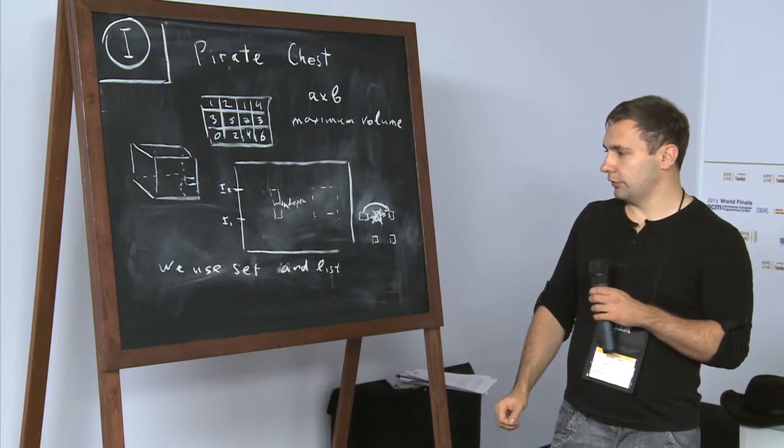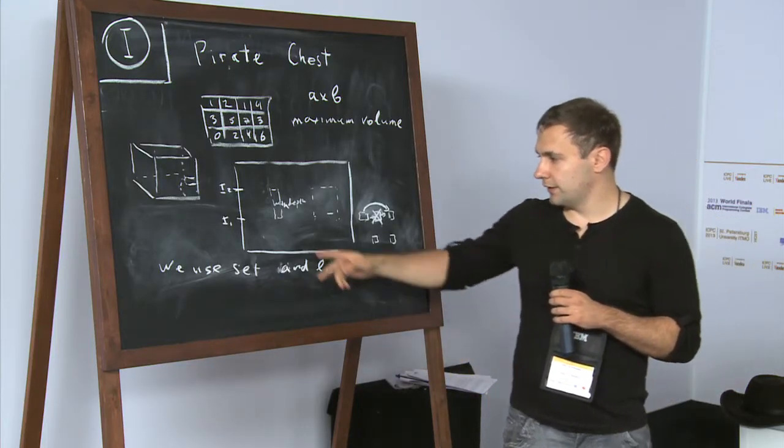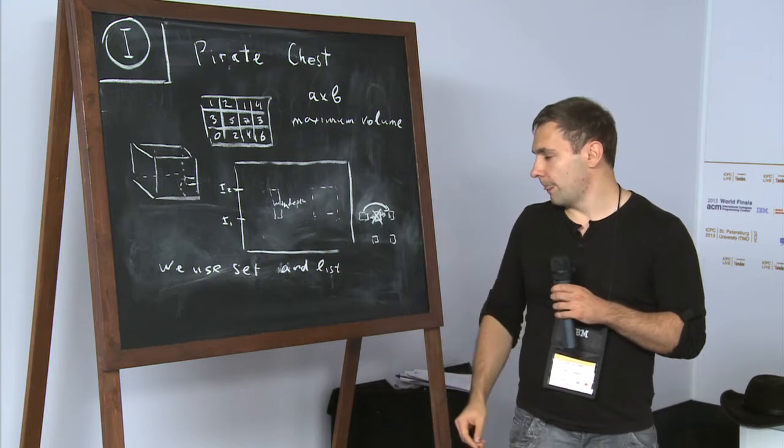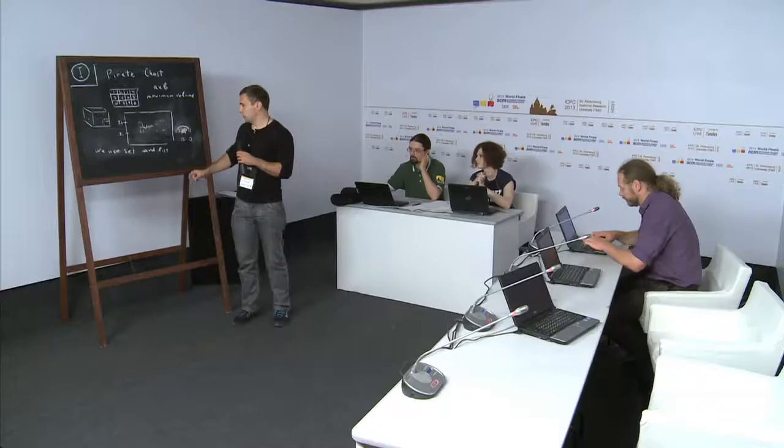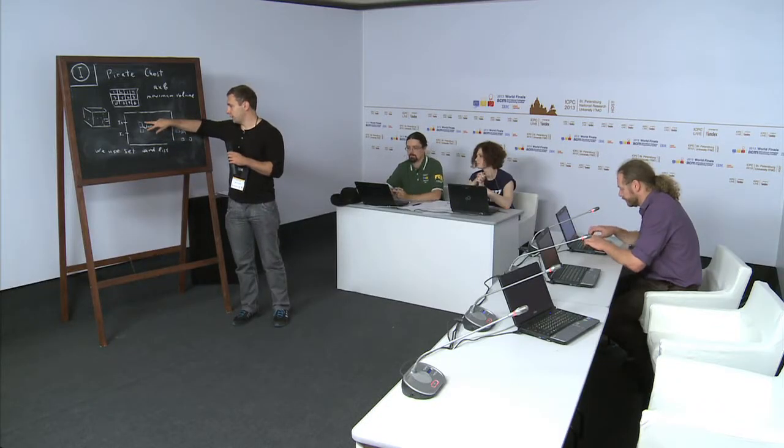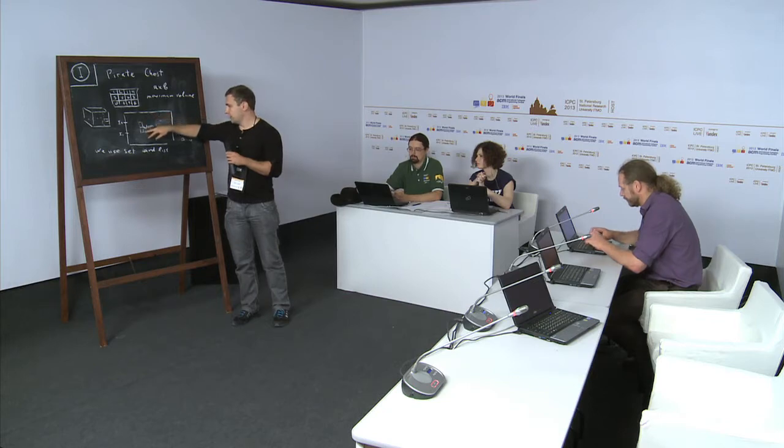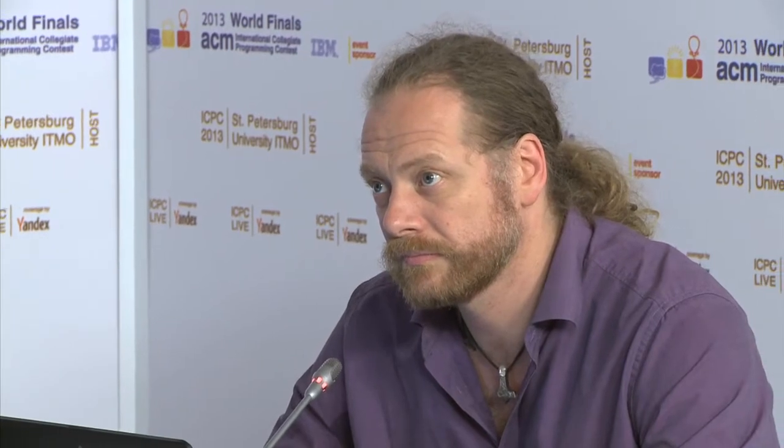So to reduce the time of this algorithm we only fixed the first coordinate. And then for each segment we find the minimum depth on such a segment. And so now we want for every point to know how much we can extend just to the left and to the right from this point.